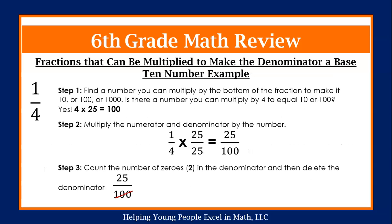For our example, we have one fourth or one over four. Step one, we are going to find a number that we can multiply by the bottom of the fraction or the denominator to make it either 10, 100 or 1000. Is there a number we can multiply to make four equal to 10 or 100? Yes, there is. If we multiply four times 25, that is equal to 100.